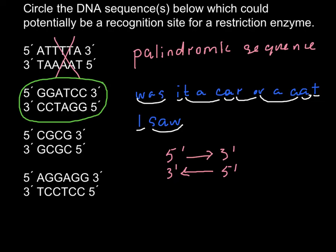Let's now consider the third example. And here on one strand in five to three direction we have CGCG. And on the second strand in five to three direction we also have CGCG. And that means that here we also have palindromic sequence. And this site can potentially be a recognition site for a restriction enzyme.